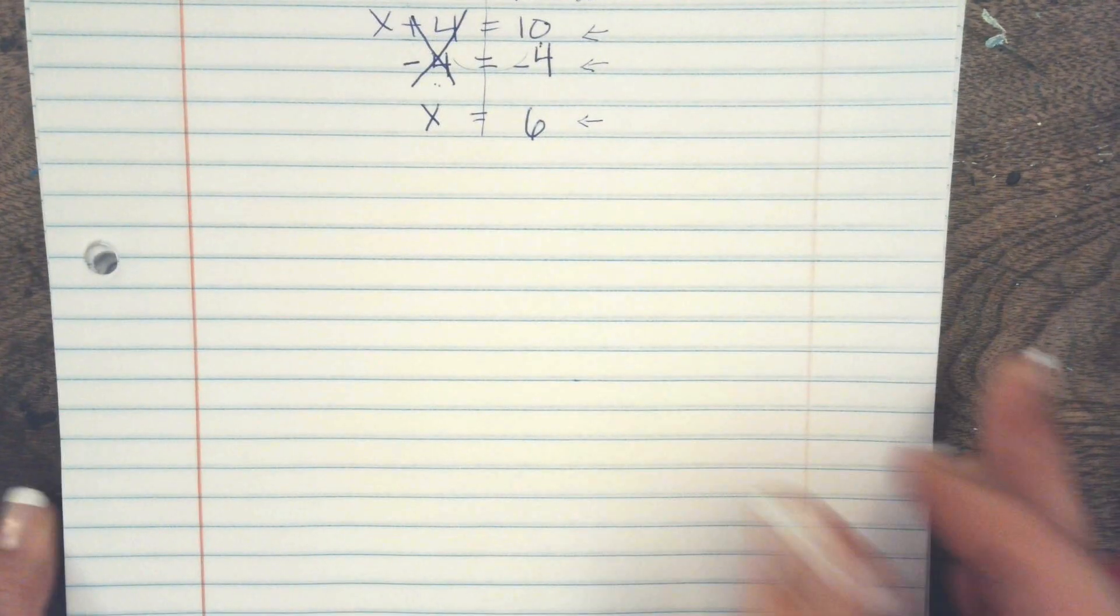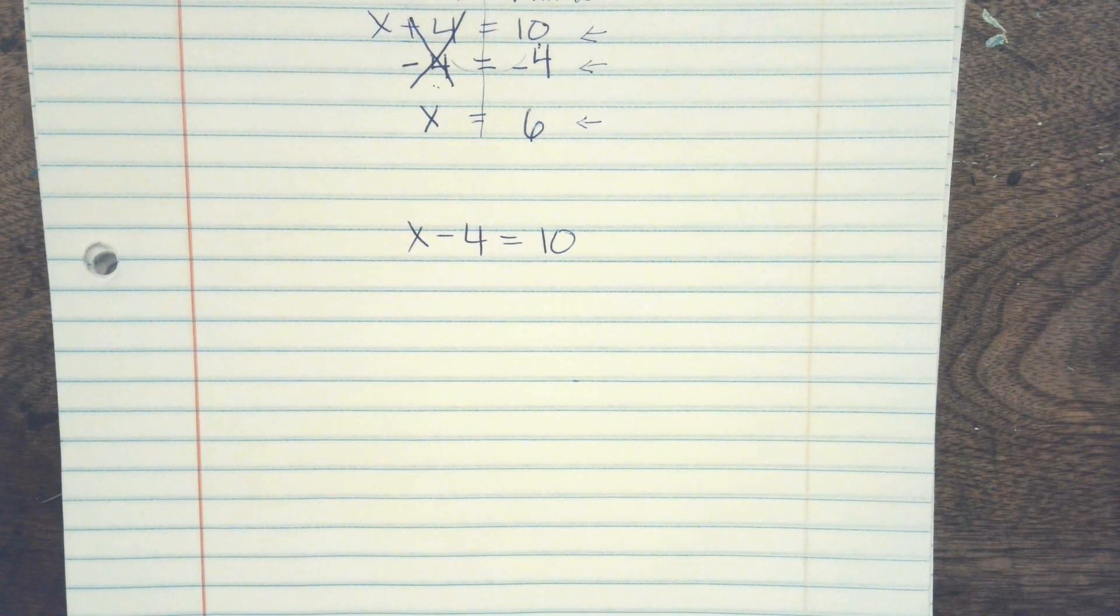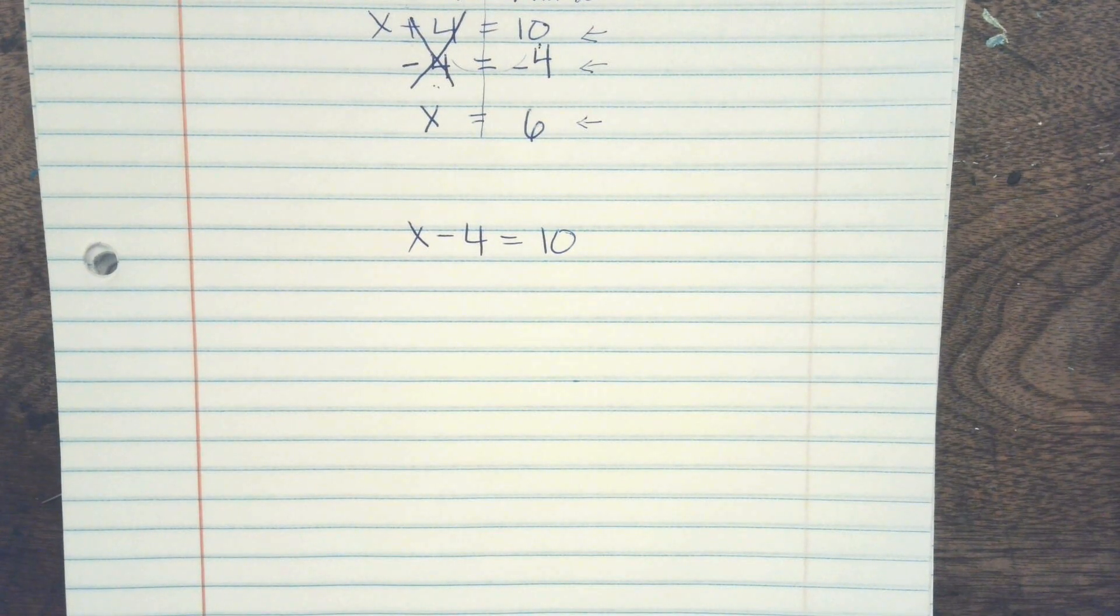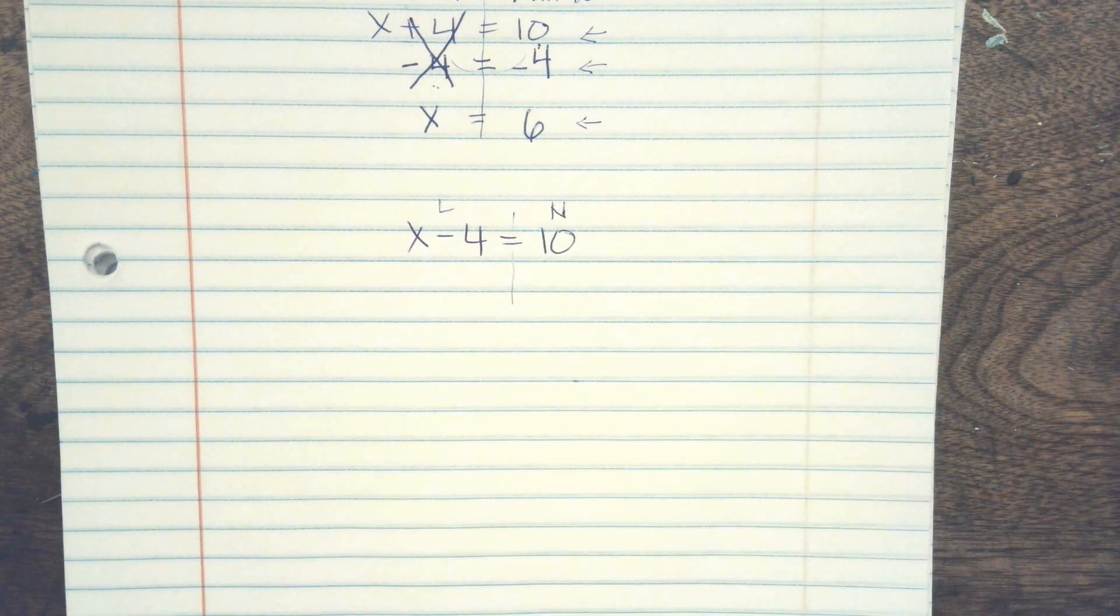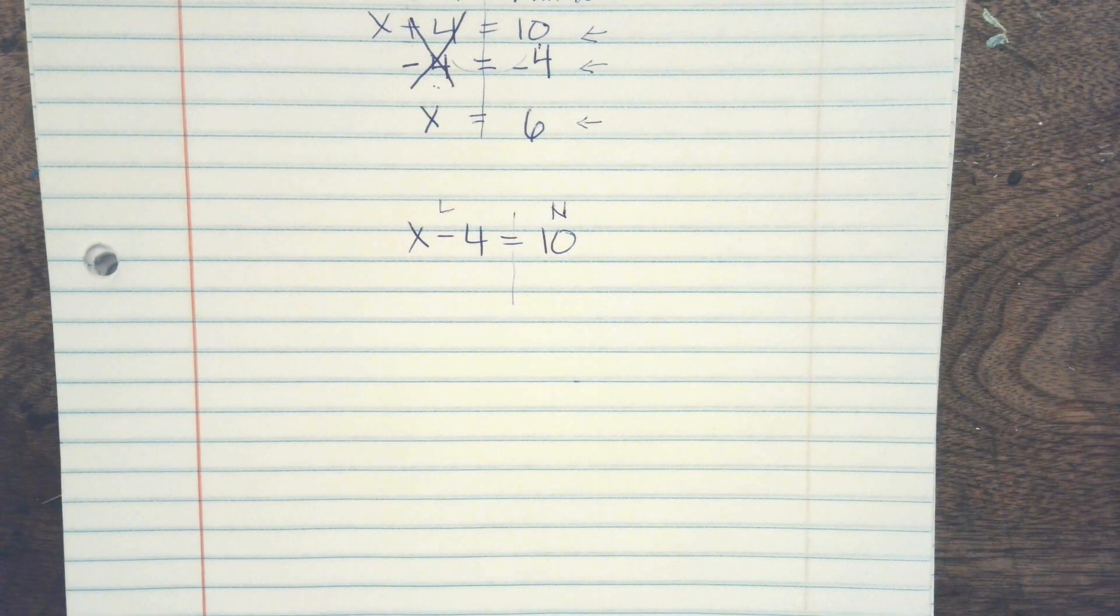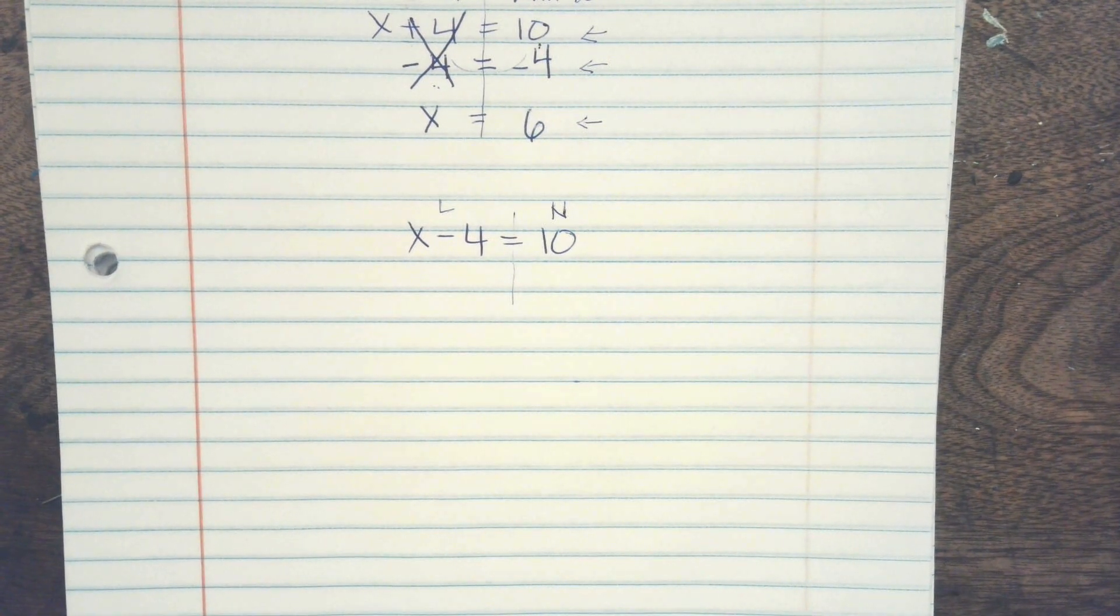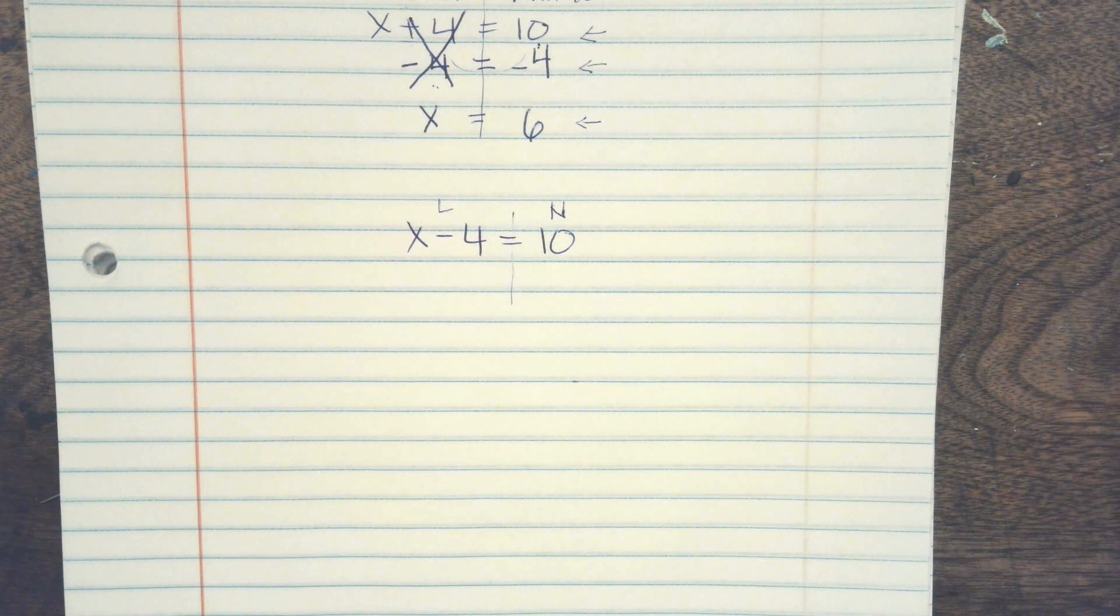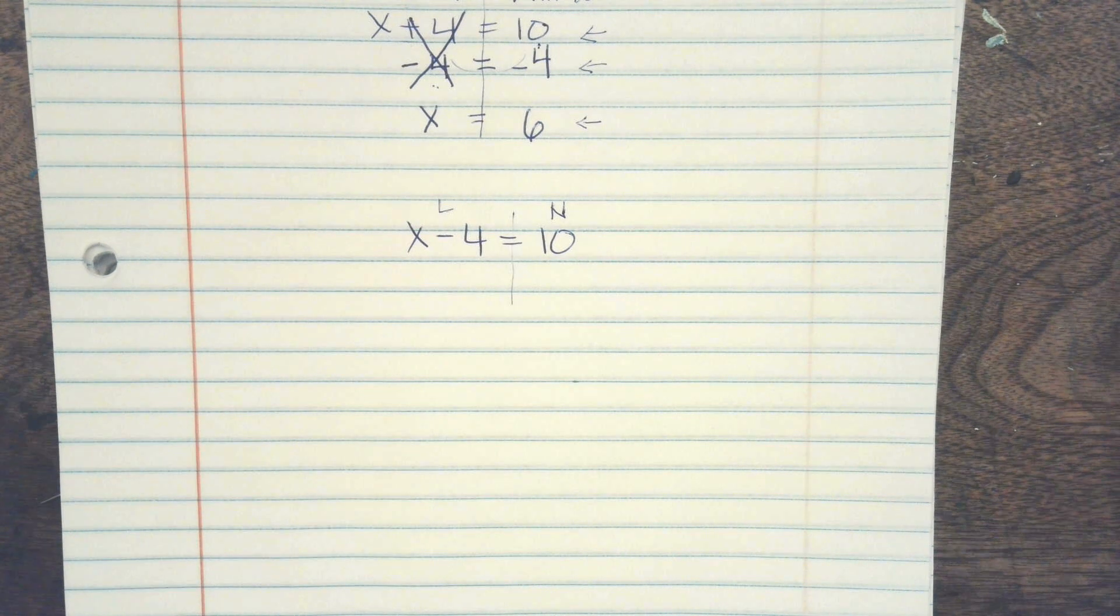Okay, the next type of problem is similar. It is when they're subtracting. So we still have our same goal. Letters on one side and numbers on the other side. So I need to get my minus 4 over to the other side. And we know that our second rule is the only way to move something over to the other side is to do the opposite. So they are subtracting 4, what do I need to do to my 4?